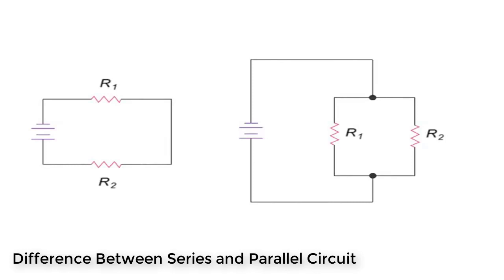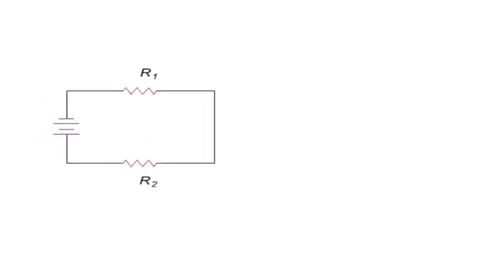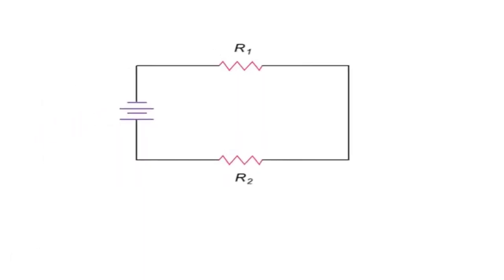Total resistance in series and parallel circuits can be determined using basic equations. The total resistance of load resistors R1, R2, and R3, shown here in series, can be determined by simply adding their ohms values together.